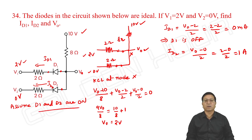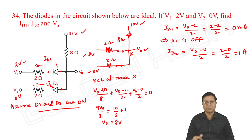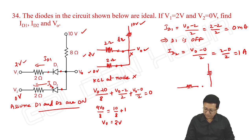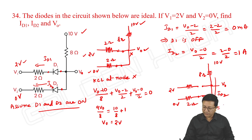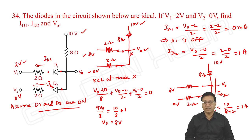We started with an assumption that D1 and D2 are on. But at the end, ID1 is 0 means D1 is off. So let us take the same circuit with D1 off and check what answers we get. With D1 off and D2 on, the circuit has 10 volts, 8 ohms, 2 ohms, 0 volts. ID2 is equal to 10 by 8 plus 2, which is 1 ampere. ID1 is 0.